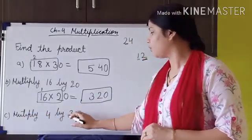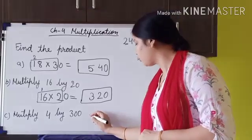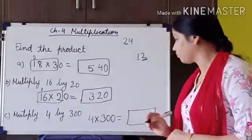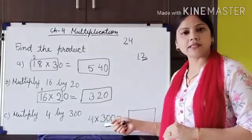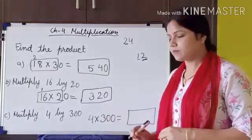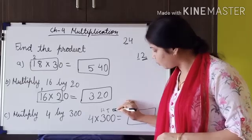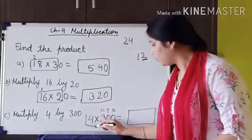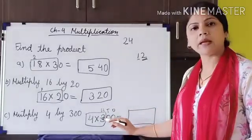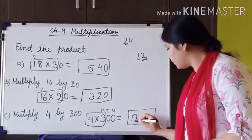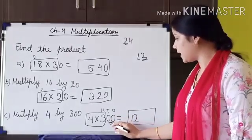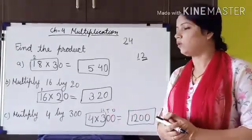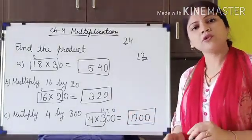Third problem: 4 multiplied by 300. Here 2 zeros are placed at the 1's and 10's positions. Multiply 4 by 3: 4 threes are 12. Then put the 2 zeros after 12, giving 1200. This is how we solve these problems using the shortcut method. Write this example also in your maths copy. Thank you.